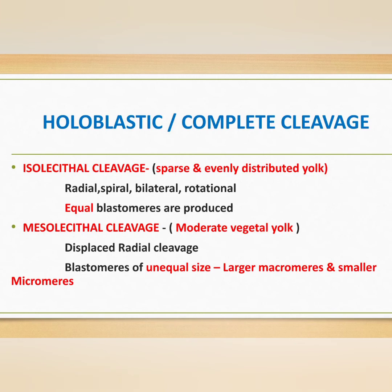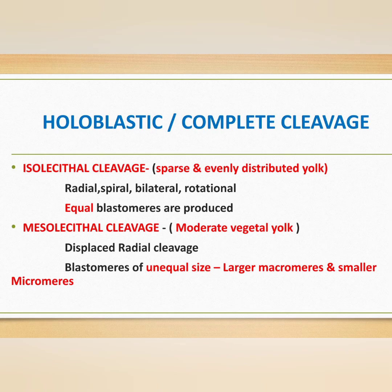Holoblastic cleavage is further classified into isolecithal and mesolecithal cleavage. Isolecithal eggs have sparse, equally distributed yolk, and the cleavage patterns are radial, spiral, bilateral, or rotational, producing equal blastomeres. In mesolecithal cleavage, the cleavage is also complete but the furrow moves slowly at the vegetal region, producing blastomeres of unequal size. Larger blastomeres from the yolk-rich vegetal pole are called macromeres; smaller blastomeres from the animal pole are called micromeres. Micromeres divide at a faster rate than macromeres. This type occurs when moderate vegetal yolk is present, and the pattern is displaced radial cleavage.